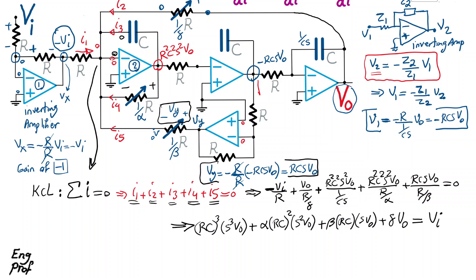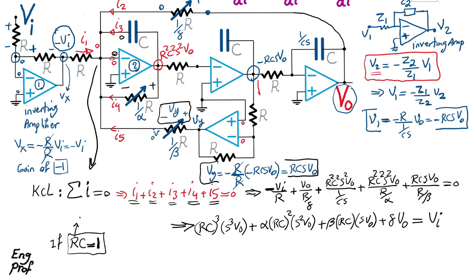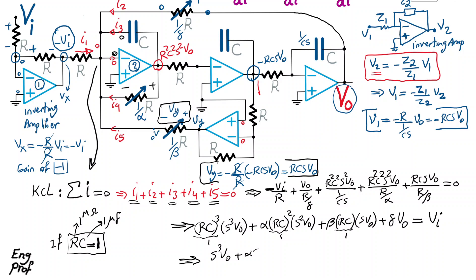The final step is setting RC = 1, for example using 1 MΩ and 1 μF. With RC = 1, the RC terms all become 1, and the equation simplifies exactly to: S³·Vout + α·S²·Vout + β·S·Vout + γ·Vout = Vi.